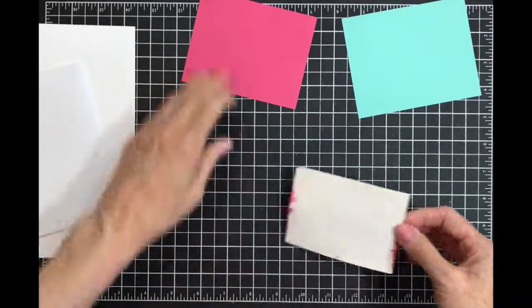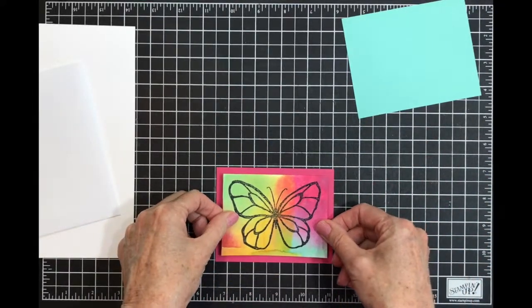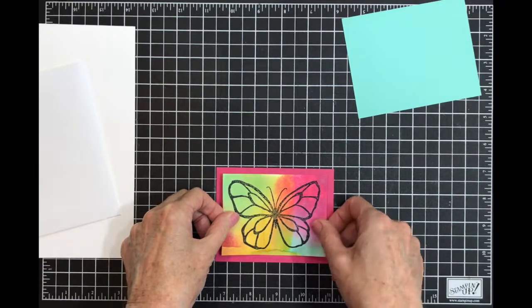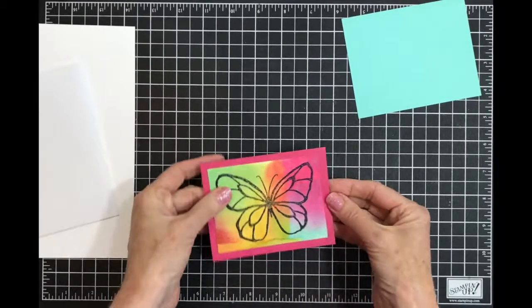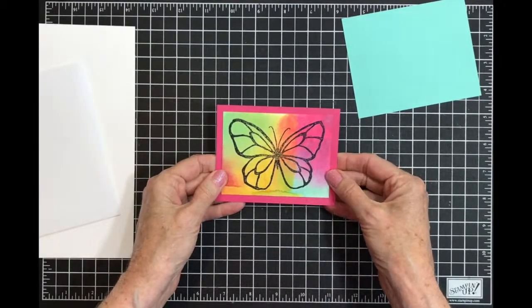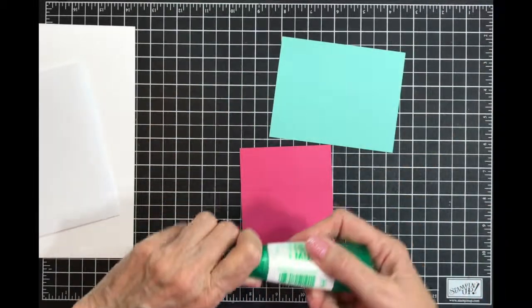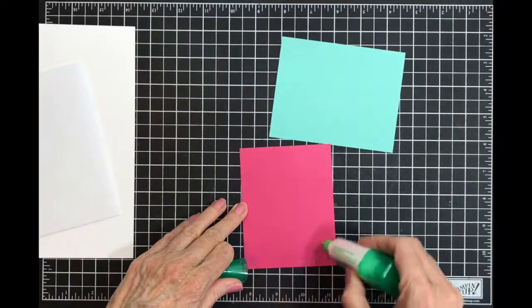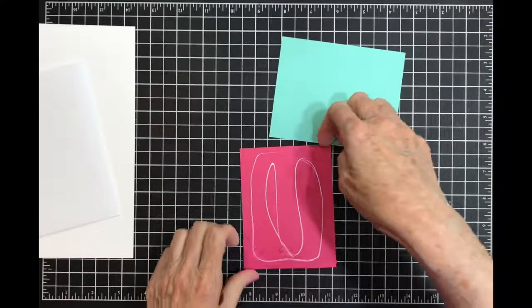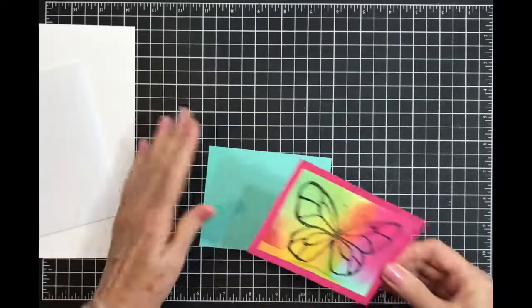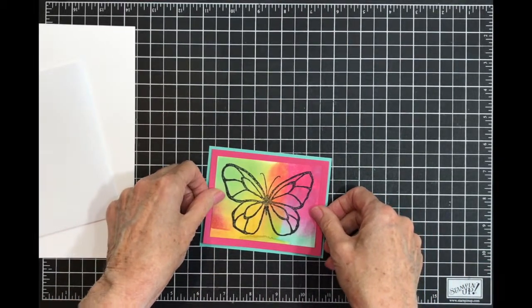Now this one goes on the melon mambo and I'm going to center it. As you see, it's a little bit larger than the picture. And then this is going to go on here because I wanted to pull in some color. So I'm going to attach this one to here. I really like this.